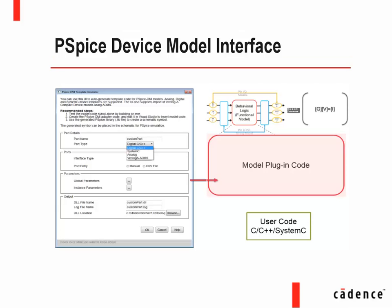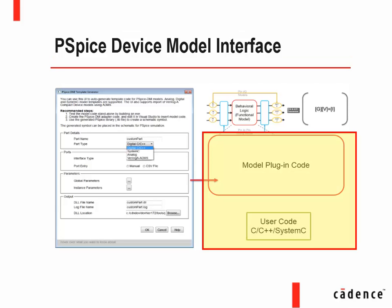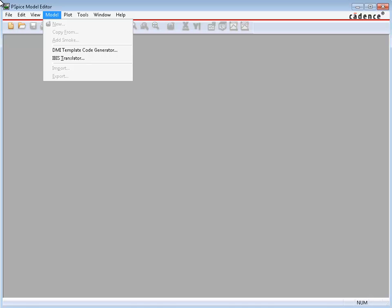When the plug-in code is combined with the user code, you can generate the required Digital C or C++, SystemC, Analog, and Verilog A DMI models. Let us now generate and simulate a digital C or C++ DMI model.